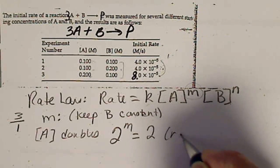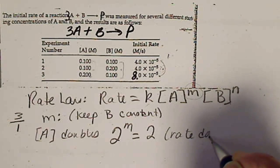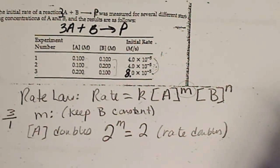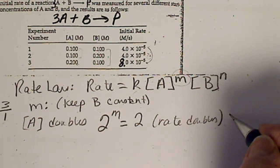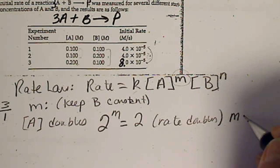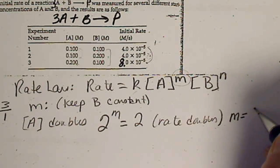And then we see that the rate doubles. A doubles, and the rate doubles. So just from looking, we can see that the order, or the exponent, on A is equal to 1.